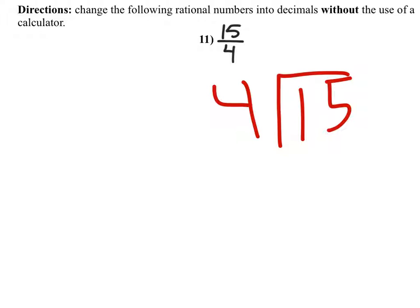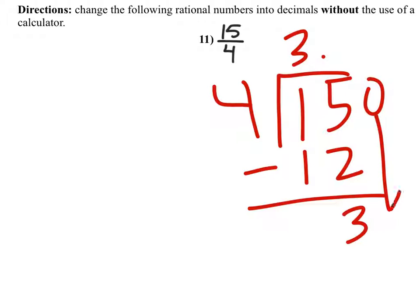Then 4 can go into 15 three times. Subtracting 12 will be 3. Then there's a decimal when you bring down your zero.